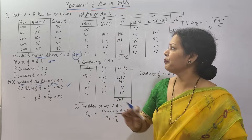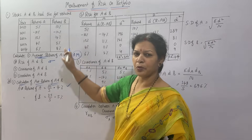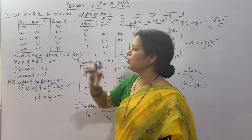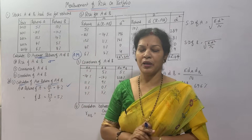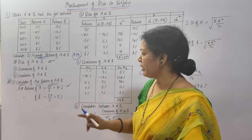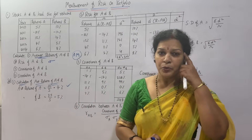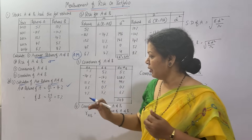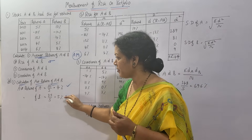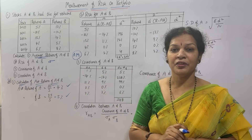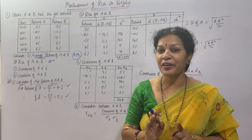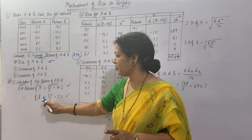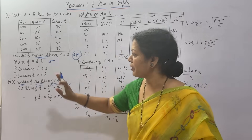In the same way, average return of B: total it up, you get 25. 25 divided by 5 gives 5% as the average return for B. So A and B average returns are obtained — first calculation is over.